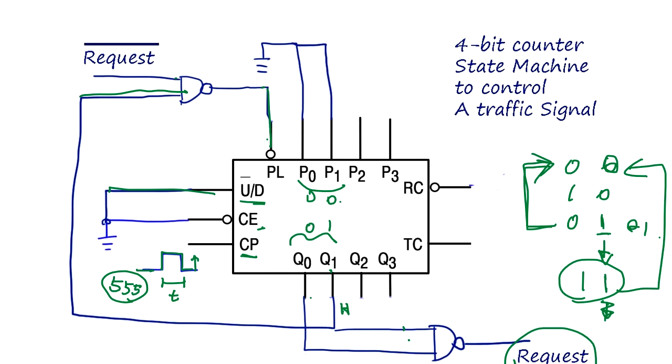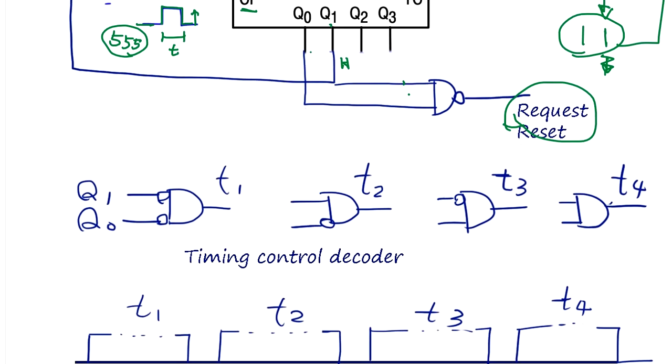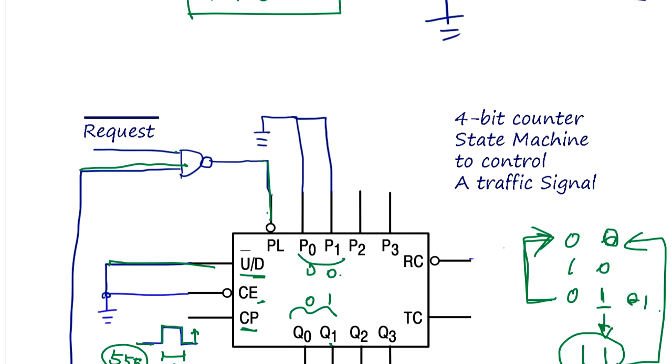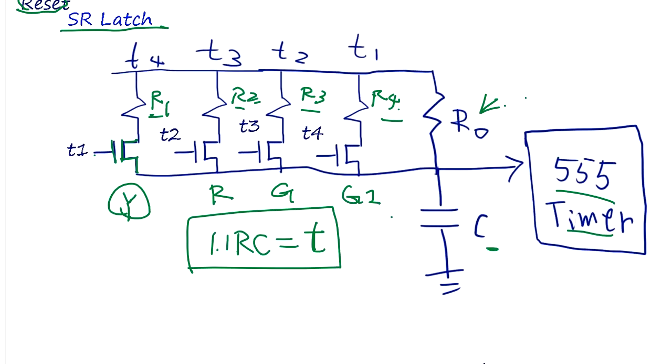So that's a very simple state machine. The decoder of state Q1 Q0 - when both are zero, turn on T1. Remember that here you turn on and time will be R1 × C × 1.1.